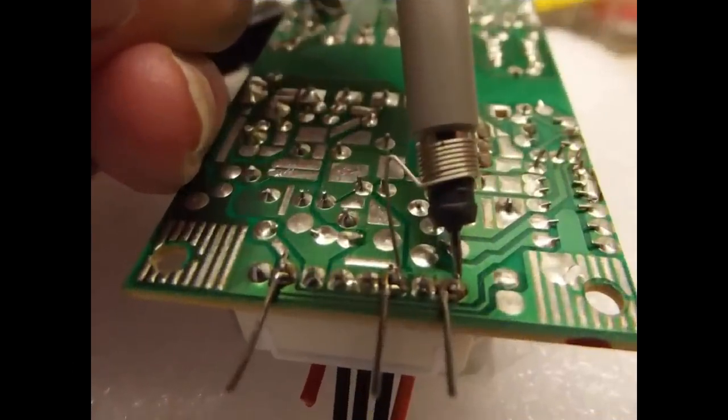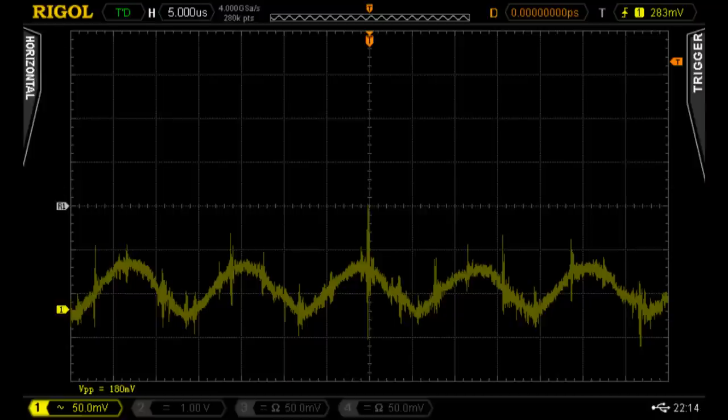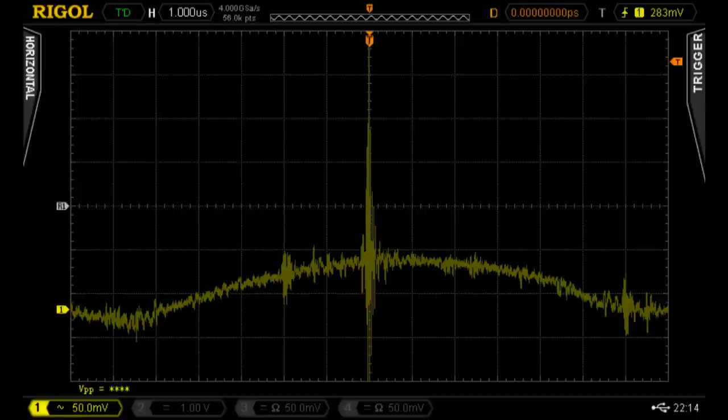Just to satisfy ourselves that we are seeing a true picture of what is actually happening, we'll now probe directly on the output contacts with our short spring wire probe. Yep, the signals still look the same as they did before.